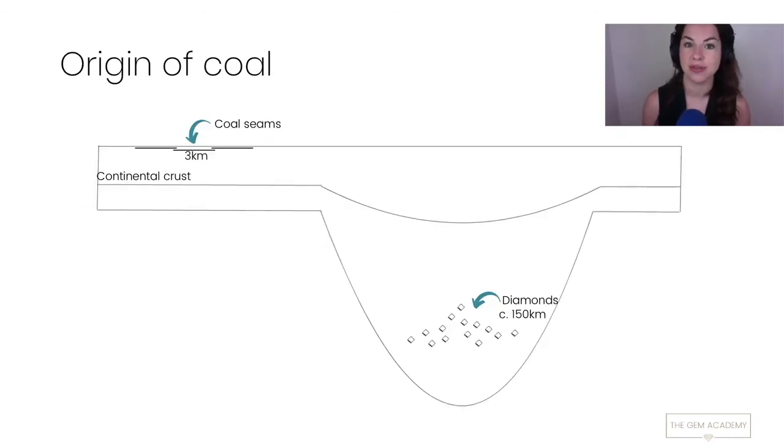These coal seams form within the earth's crust at relatively shallow depths, so we're talking a maximum of three kilometers deep below the surface. Compare that to the average depth of most diamond formation which is 150 kilometers below the surface, we can see that coal seams are nowhere near diamonds. So diamonds can't form from coal because geologically they're very distant. So from looking at the origin only we can see that one material has nothing to do with the other.